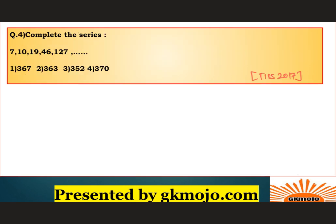Question 4: Complete the series. Looking at 7, 10, 19, 46, 127 — the differences are 3, 9, 27, 81, which are 3¹, 3², 3³, 3⁴. So the next difference should be 3⁵ = 243. Adding 243 to 127 gives 370, so the correct answer is option 4, which is 370.